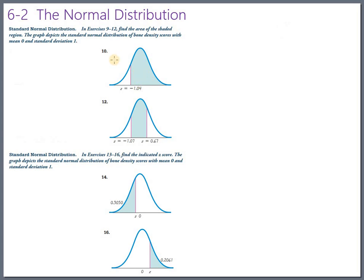So in number 10, they're asking us to find out what percentage of bone density scores would be greater than negative 1.04. And there's their picture, and they've got it shaded in already. So let's just go ahead and jump straight over to StatDisk.